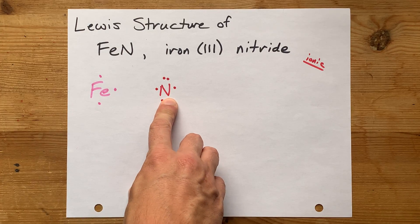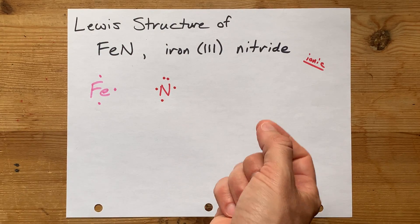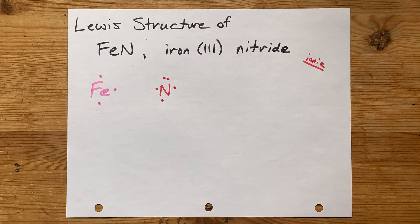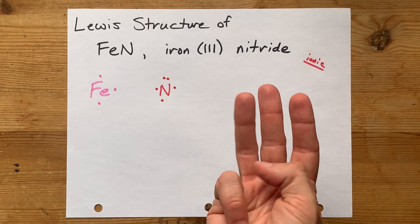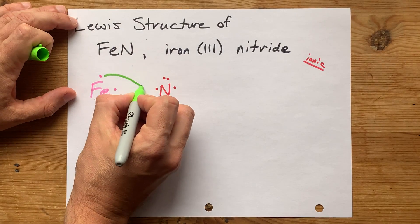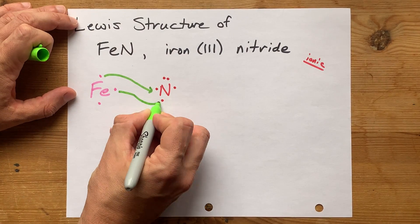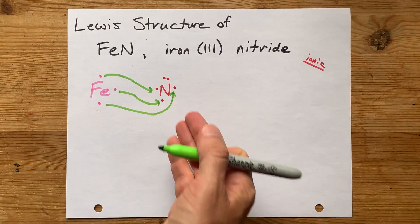Specifically, the non-metals are probably going to want to satisfy the octet rule, which is that they want 8 electrons in their outer shell. This nitrogen currently has 5. It needs 3 more to complete its octet. So iron will donate 1, 2, and 3 electrons to nitrogen.